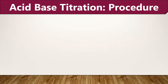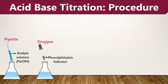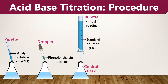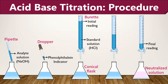Now we will discuss the procedure of acid-base titration. First, the sample to be analyzed, or the analyte solution, is added into the conical flask. Then add two to three drops of the preferred acid-base indicator to the sample solution. After that, add the standard solution or titrant into the burette and note down the initial reading. Then add the standard solution into the conical flask until the color of the sample turns pink.